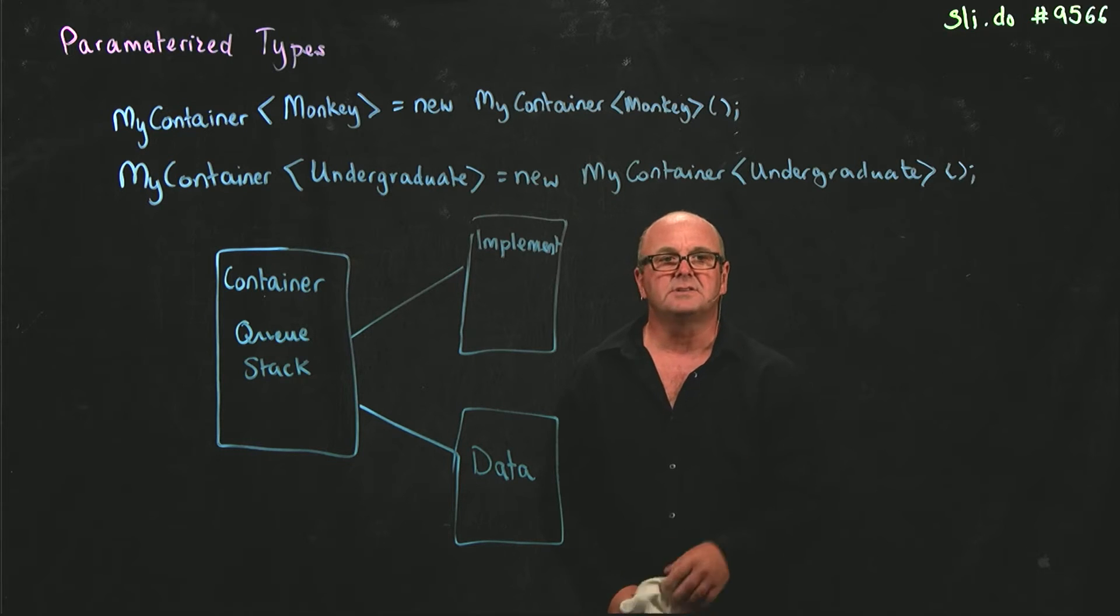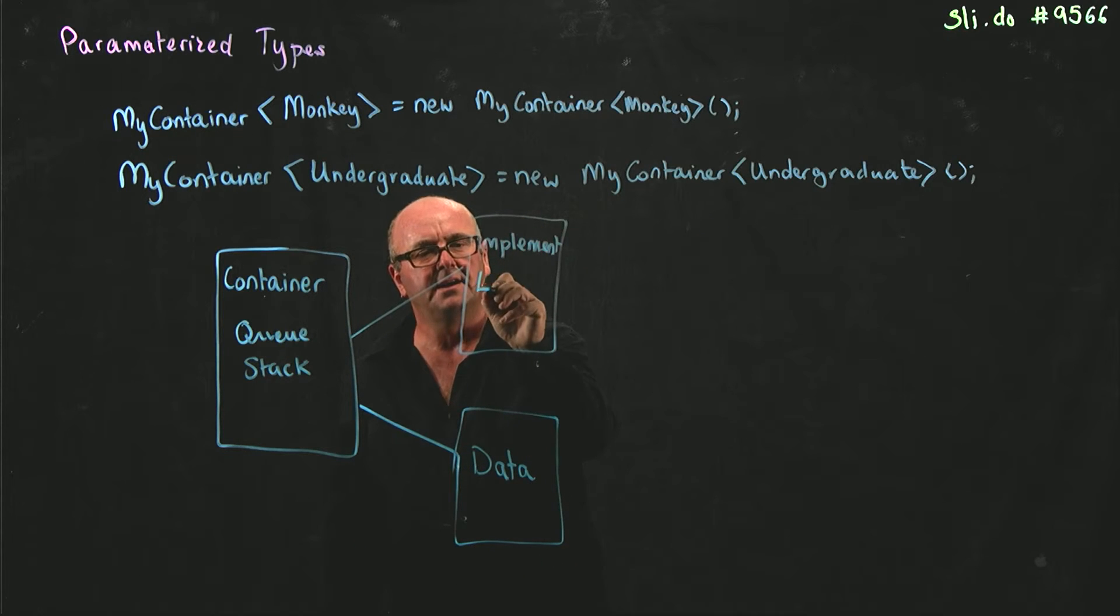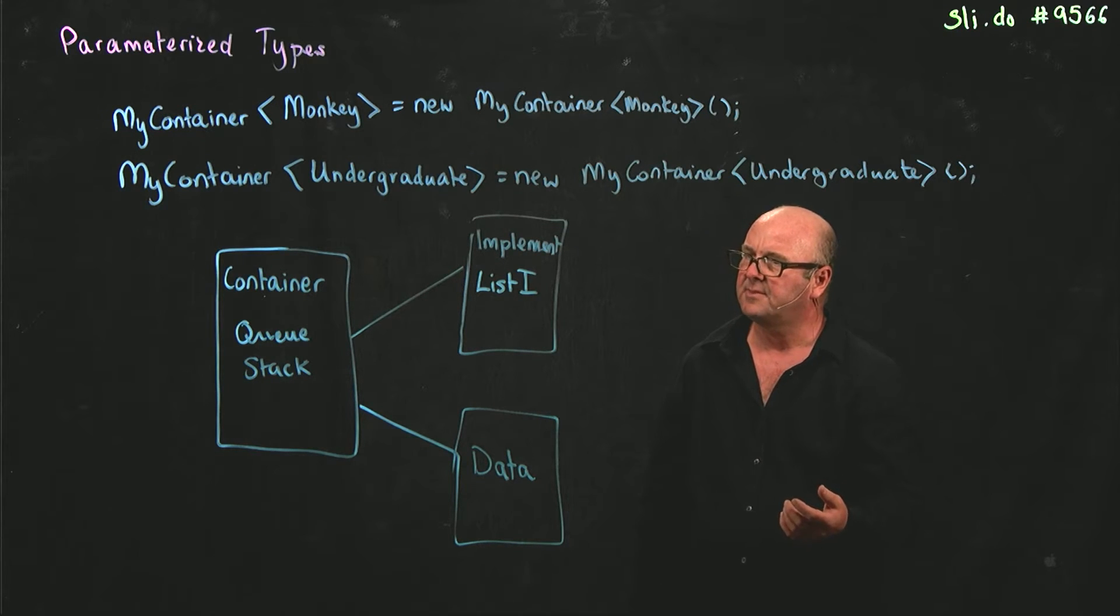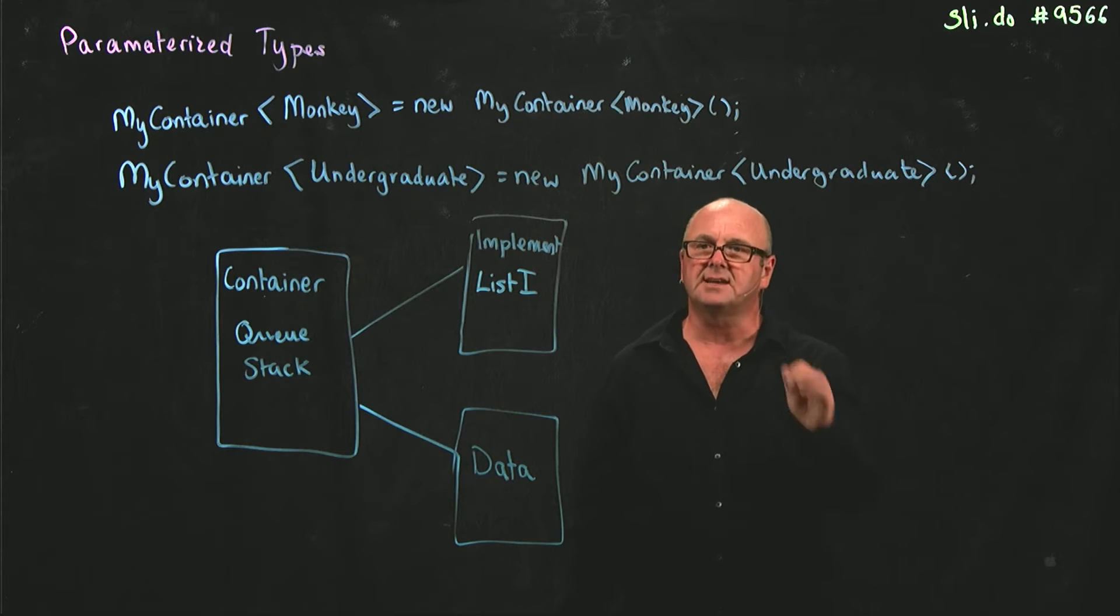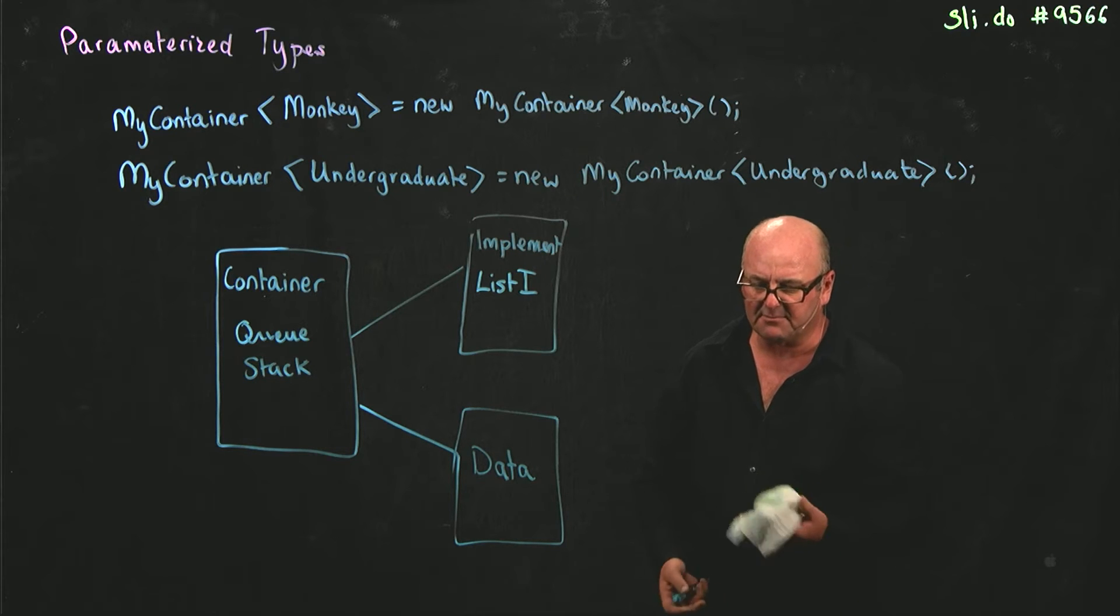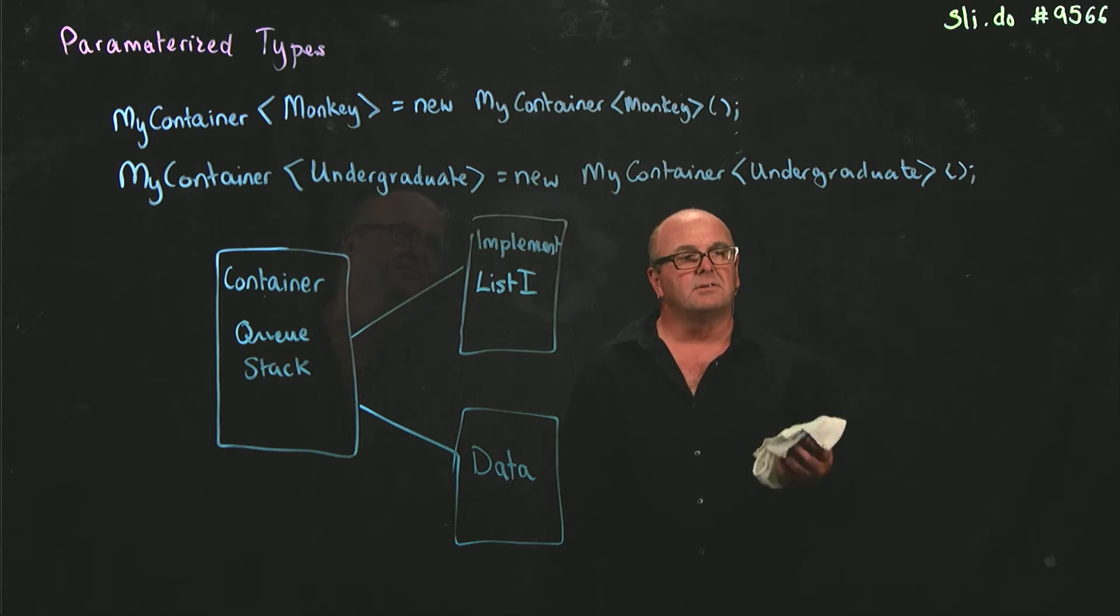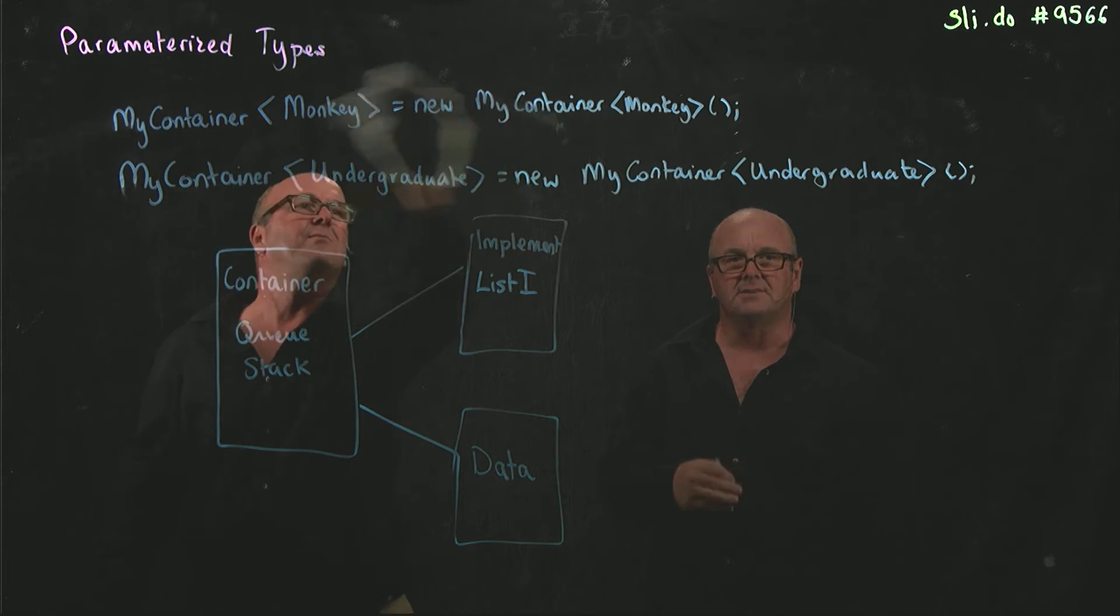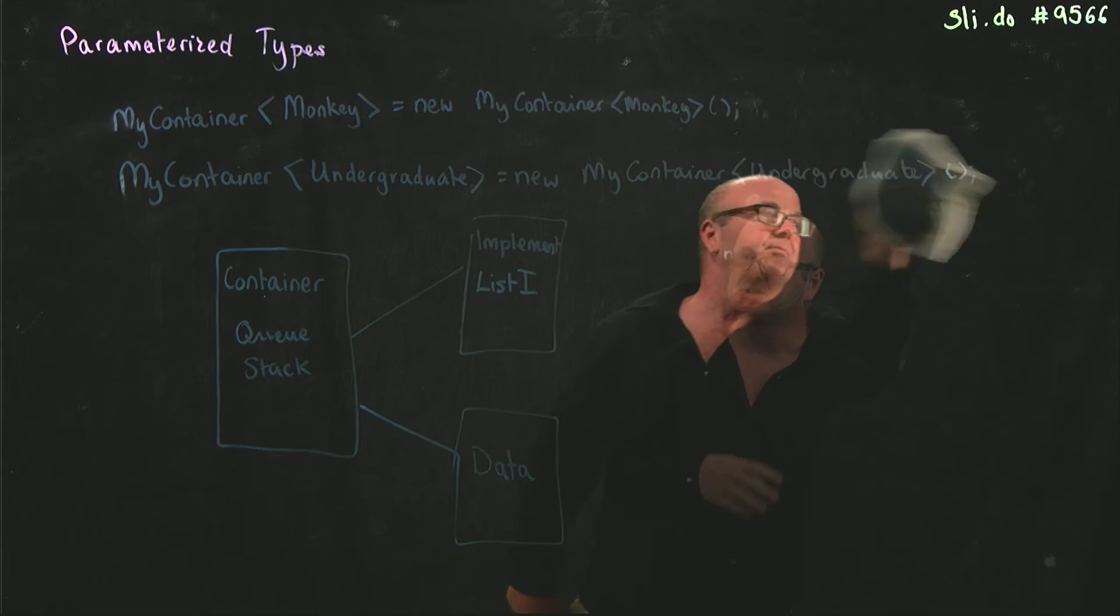So what we're going to use throughout the class are parameterized types and generic programming so that we can write a container. For example, we could write a linked list that implements the list interface, and we can use that linked list first in assignment one to hold integers, secondly in assignment two to hold strings, thirdly in assignment three to hold something else. Once we've got it solved and debugged, we can use that linked list time and again. We don't have to keep rewriting it. And so the way that we do that is we tell Java we're going to use generic programming and parameterized types.